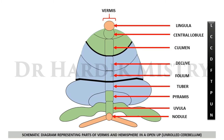A mnemonic to remember the parts of the vermis is: L-C-C-D-F-T-P-U-N — L for lingula, C for central lobule, C for culmen, D for declive, F for folium, T for tuber, P for pyramids, U for uvula, and N for nodule. The parafloculus is a part of the hemisphere.